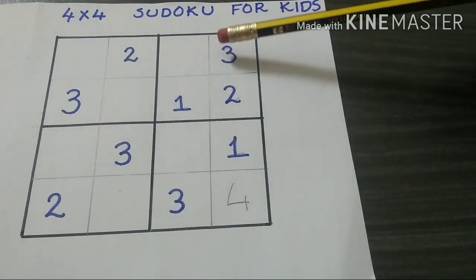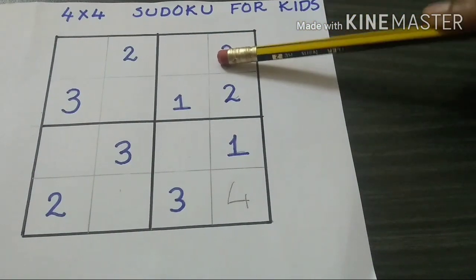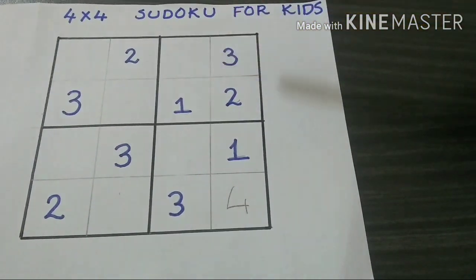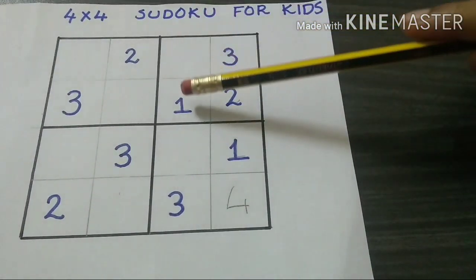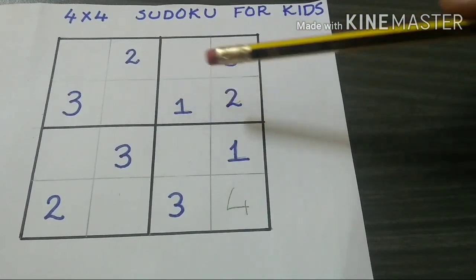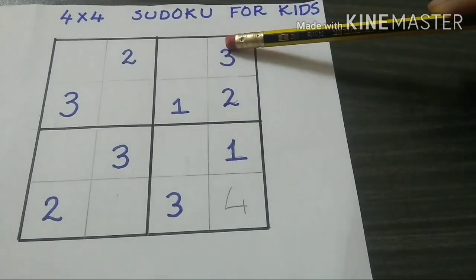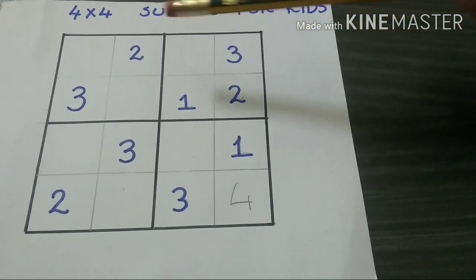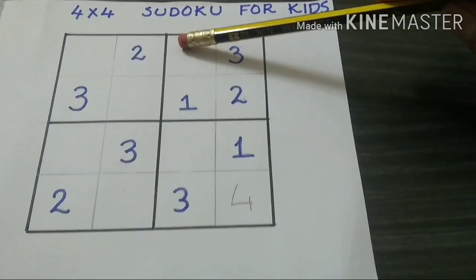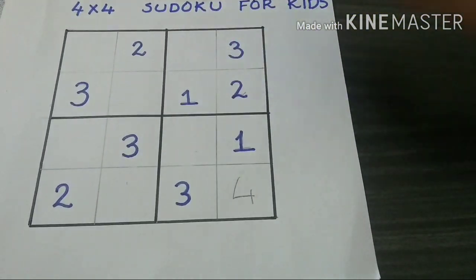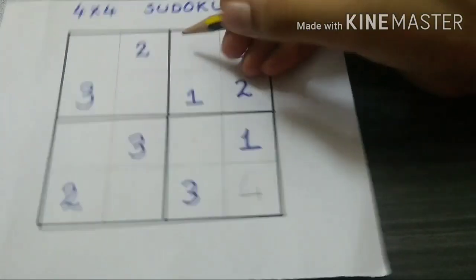Now consider this square. There are three numbers: 1, 2, and 3. There is only one number missing, that is 4, so we have to write 4.